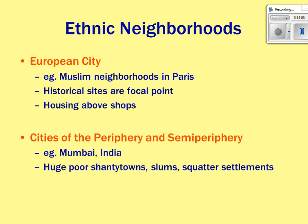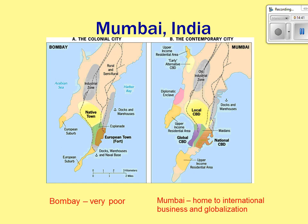In European cities, there are large Muslim populations — for example, in Paris — with housing above shops and historical sites as focal points. European cities don't have as much urban sprawl because cities are so close together and there's little room to expand. In peripheral and semi-peripheral cities, as seen with those city models, there are huge poor shantytown slums and squatter settlements. Mumbai, formerly known as Bombay during colonial times, illustrates commercialization — it has evolved from a colonial city to an international business hub.